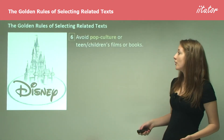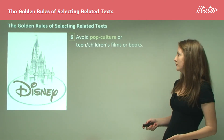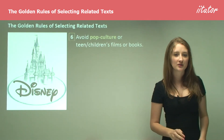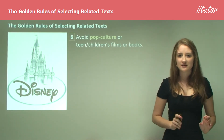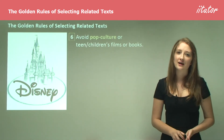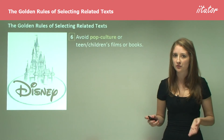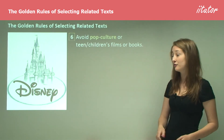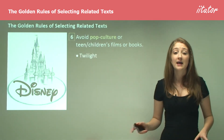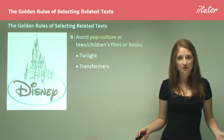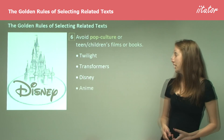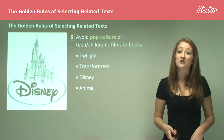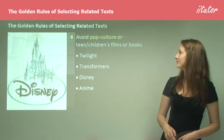The sixth area is that you should avoid pop culture or teen and children's books or films. While these might be things you really enjoy outside of school, as related texts they really just don't work — they're either too simple or too obvious a choice. This means you should avoid Twilight, Harry Potter, movies like Transformers, anything Disney, and also anime.